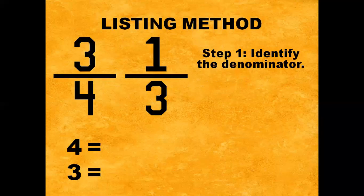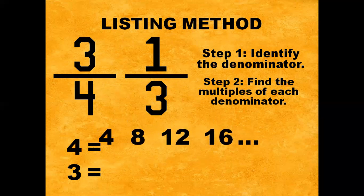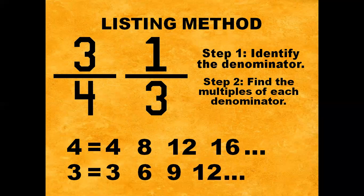Step number two: find the multiples of each denominator. The multiples of four are four, eight, twelve, sixteen, and so on. The multiples of three are three, six, nine, twelve, and so on.